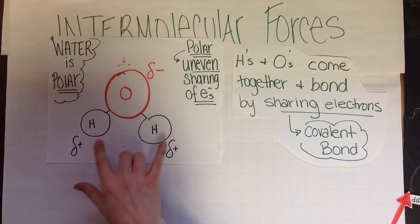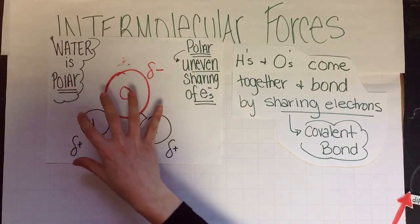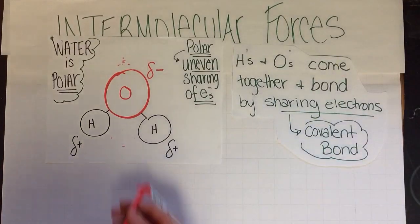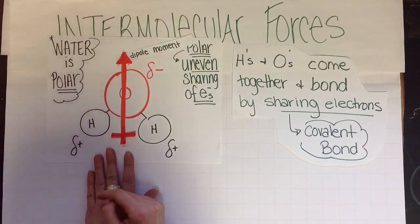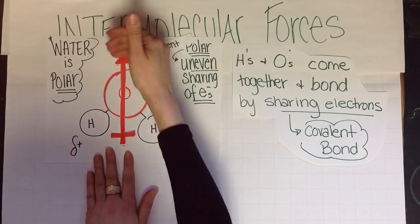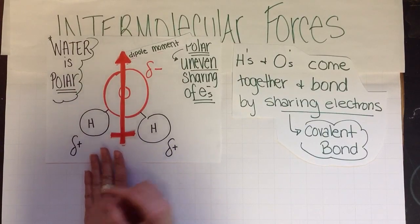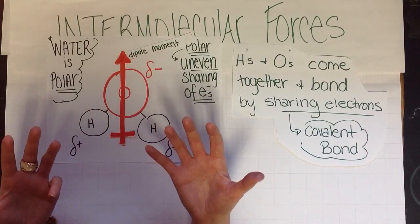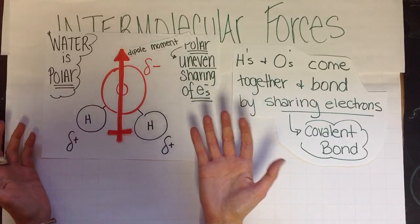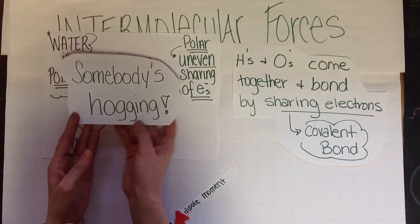Oxygen is hogging the electrons more than the hydrogens because it has the negative sign. It's not completely negative because there's still sharing going on — they're still attached. To show that oxygen is hogging those electrons, we draw an arrow pointing in the direction where the electrons are being hogged, with a little plus sign at the bottom showing the positive end. This side of the water molecule is more positively charged; this side is more negatively charged. This is called a dipole moment. We know the charges from the columns on our periodic table — oxygen is a negative two, so oxygen is the hogger of the electrons. In polar molecules, somebody's hogging the electrons — uneven sharing.